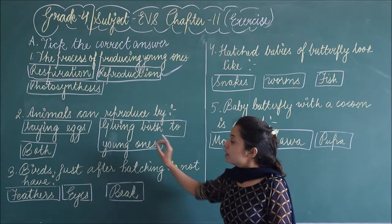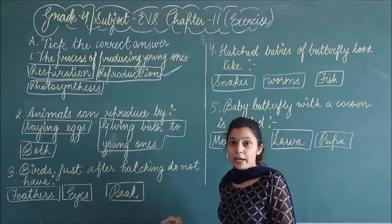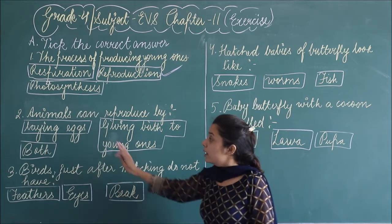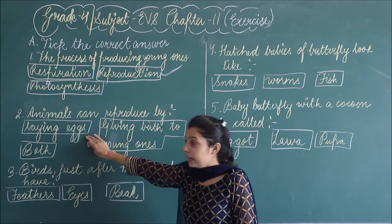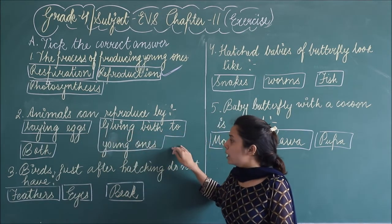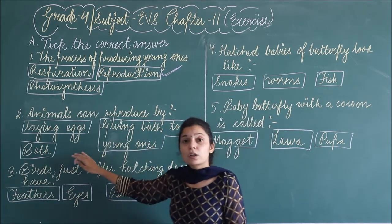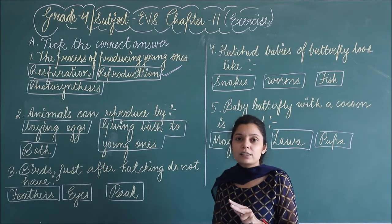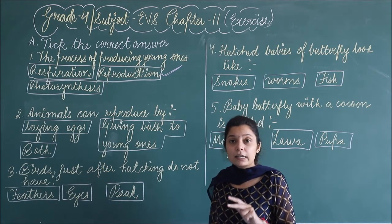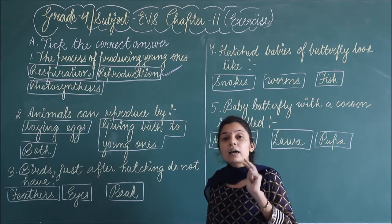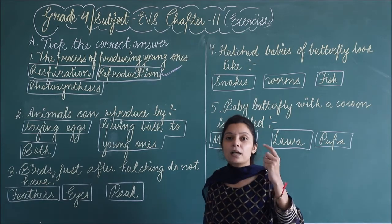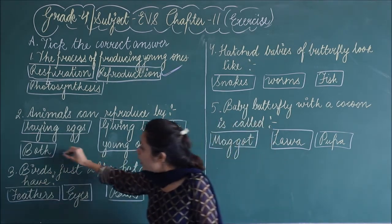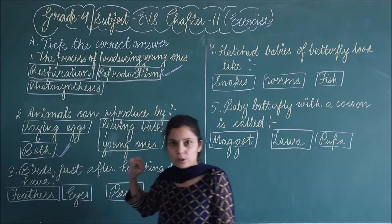Second question: animals can reproduce by? Jho animals hain, wo kaise reproduce kar sakti hai? Options are: by laying eggs, giving birth to the young ones, or both. Animals reproduce in two ways — either by laying eggs or by directly giving birth to their young ones. So the answer here will be: both.